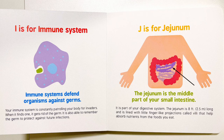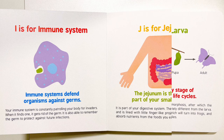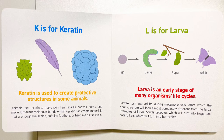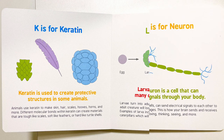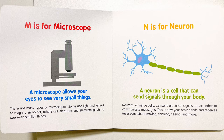J is for jejunum. K is for keratin. L is for larva. M is for microscope. N is for neuron.